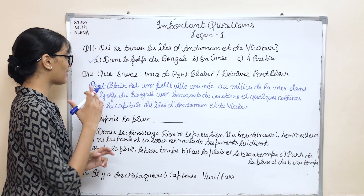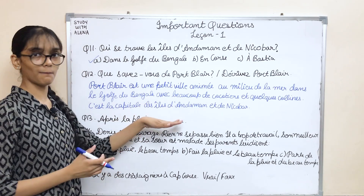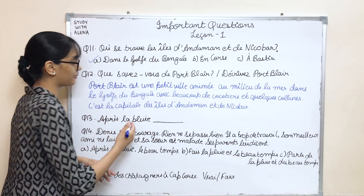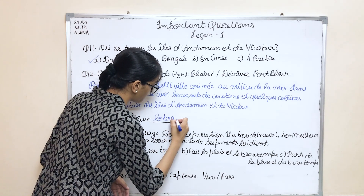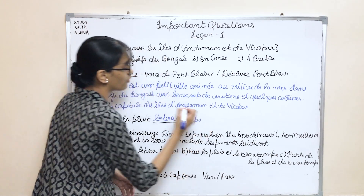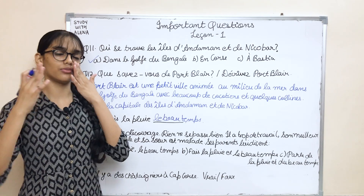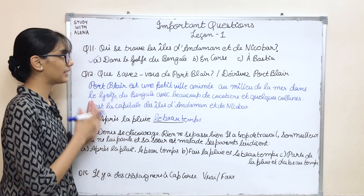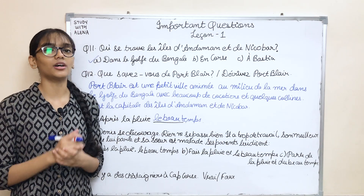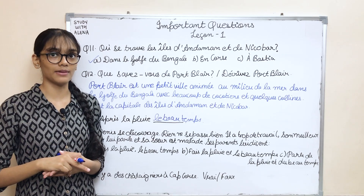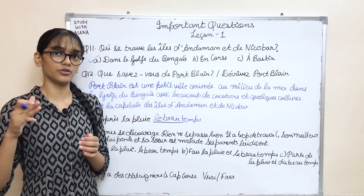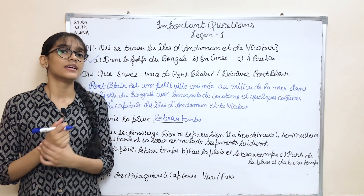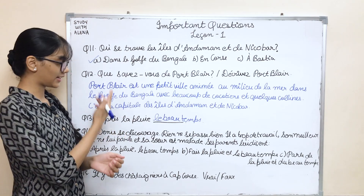In the thirteenth question, we have a proverb to complete: 'Après la pluie...?' It can come as an MCQ where you are given options to choose the correct part. The answer is 'Après la pluie, le beau temps.' There are other proverbs you also need to learn, which were given as match-the-following questions. Usually they come as match-the-following in MCQ form — you are given three to four proverbs and have to choose the correct pair or order.